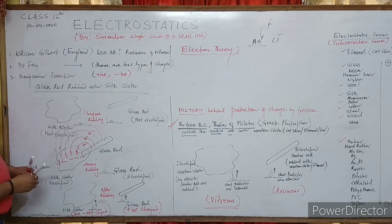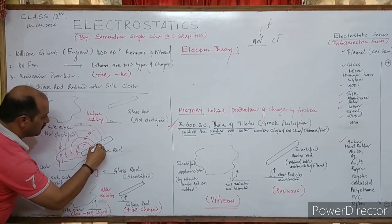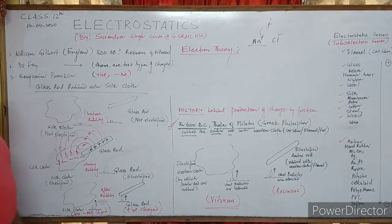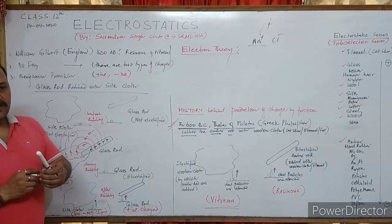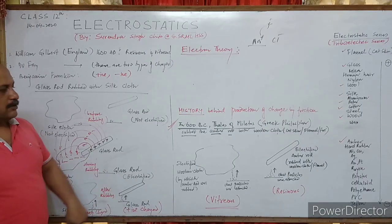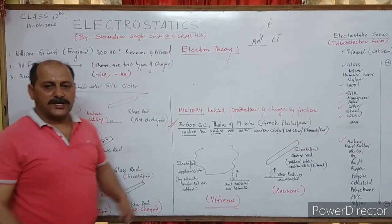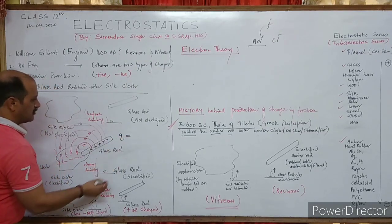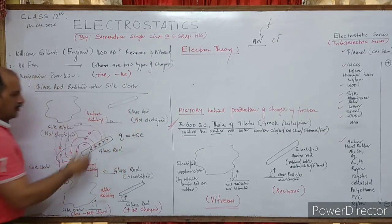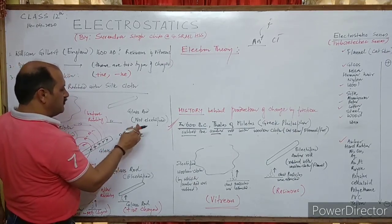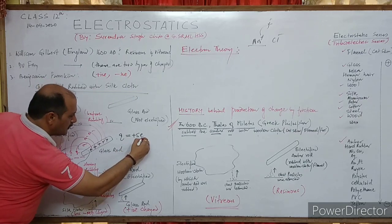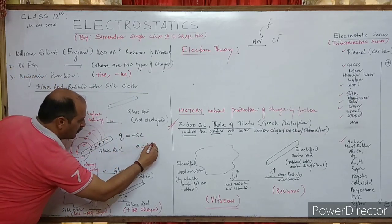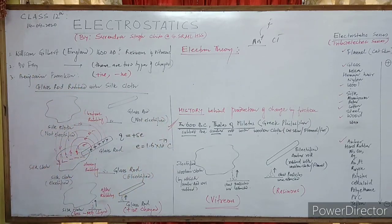Say five electrons are negative. Simultaneously the glass rod becomes plus five. Millions, billions, and trillions of electrons transfer from one body to another while rubbing. So basically the glass rod acquires charge Q = +5e. The charge of an electron is 1.6 × 10⁻¹⁹ coulombs, and the silk cloth has a charge Q = −5e because 5 electrons have been transferred.